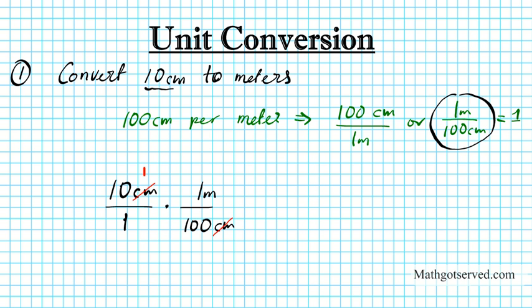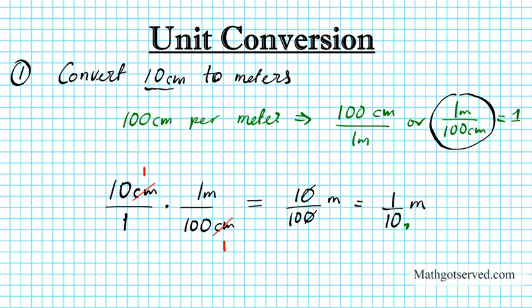So what happens here? You notice that this centimeter and this centimeter divide out — this goes to 1 and this goes to 1. And now you can multiply across. You're going to notice you have 10 over 100 meters. The goal is to get meters. So let's simplify this — dividing by 10, the zeros can divide out. You have 1 over 10 meters. To make the denominator 1, I need to move the decimal point forward once. So the answer is 0.1 meter.